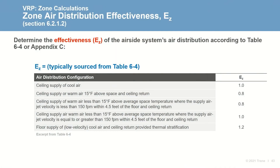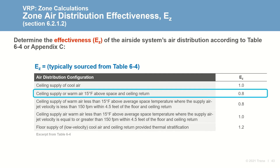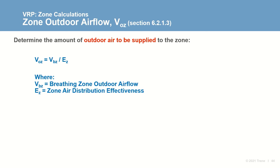The zone air distribution effectiveness value, or E-sub-Z, is typically determined by identifying the air distribution configuration and the corresponding value. So for the example, if the system supplies cool air from the ceiling, the effectiveness value is 1.0. If the system supplies warm air from the ceiling 15 degrees above the space temperature, the effectiveness is 0.8. Because cooling and heating operation can have different effectiveness values, the designer will need to evaluate both operation modes. The zone effectiveness number is then used as the denominator in the zone outdoor air flow, or V-sub-OZ equation, to determine the amount of outdoor air that needs to be delivered through the supply diffusers so that the ventilation air reaches the actual breathing zone.